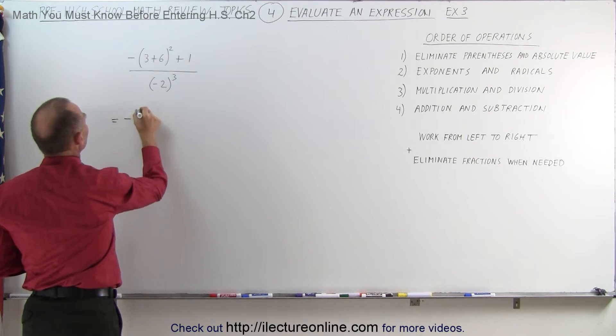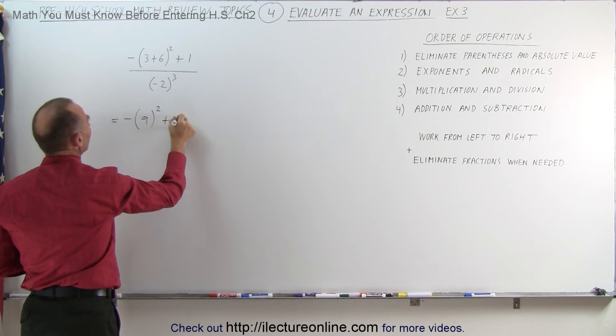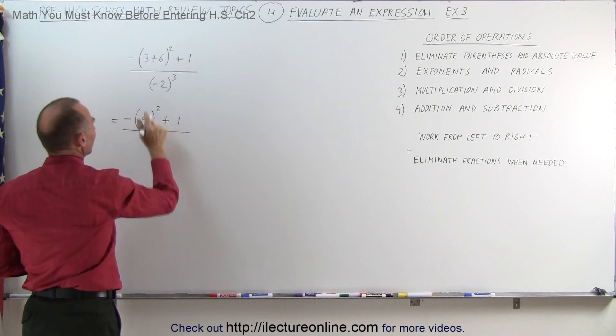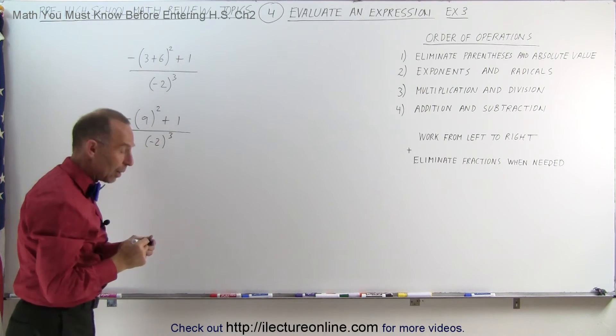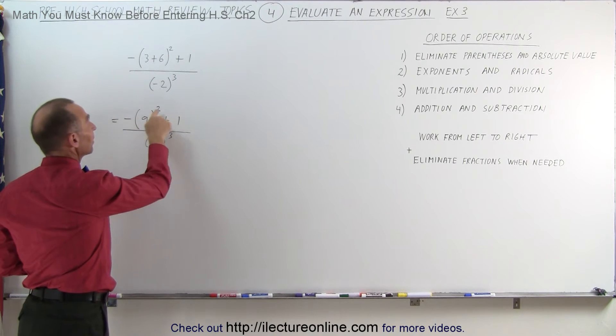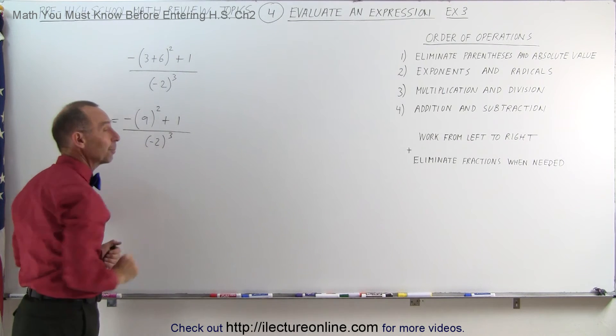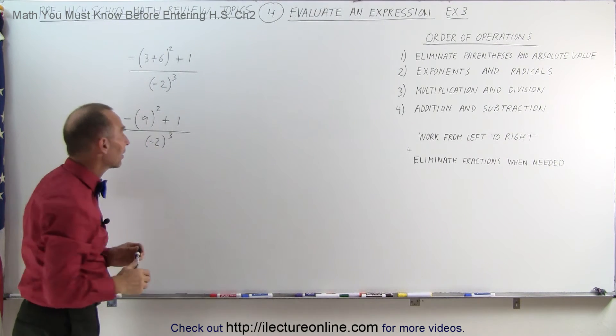So this is equal to the negative of 3 plus 6, which is 9, raised to the second power, plus 1, divided by the denominator, which is minus 2 raised to the third power. Now you can see here that in the numerator, this negative sign is not affected by the exponent. But in the denominator, since the negative sign is inside the parentheses, it is affected by the exponent.